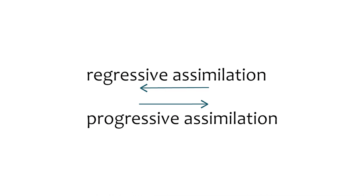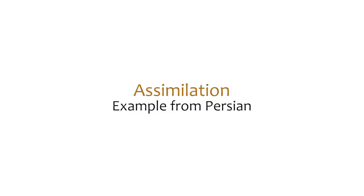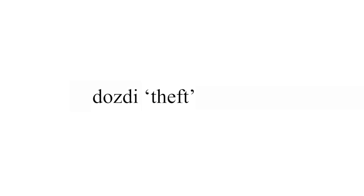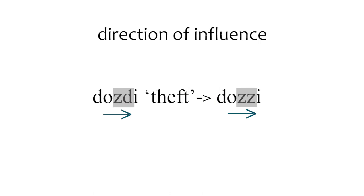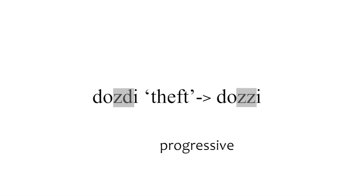I'm going to be consistent in using 'regressive' versus 'progressive' because they sound alike except for their prefix, and there is an explicit emphasis on direction. I know it's initially counterintuitive, but once you stop and think about why those terms are used, it gives you a moment of clarity. Another Persian example: the word for 'theft' is 'dozd'. When you speak fast, you say 'dozz'. The 'd' influences the following sound, so the direction of influence is forward — hence progressive — and the following sound totally changes to become similar to the previous sound.